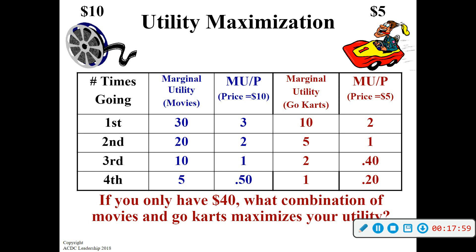We still have $15 left to spend, so we're going to spend another $10 on movies and another $5 on go-karts. Why don't we just go to the movies four times? Because it's not going to maximize utility. You're going to get the most happiness, benefit, satisfaction, utility — whatever you want to call it — out of three movies and two go-karts.